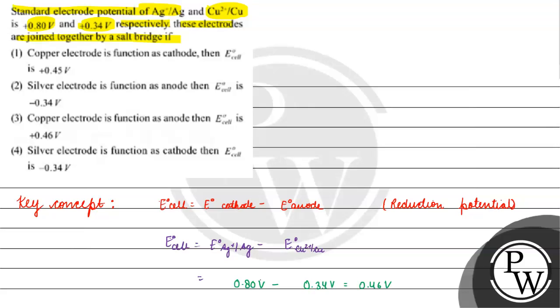Now we have options. In the option there is copper as cathode - this is wrong, copper will be anode. Option two says silver will be anode - this is also wrong.